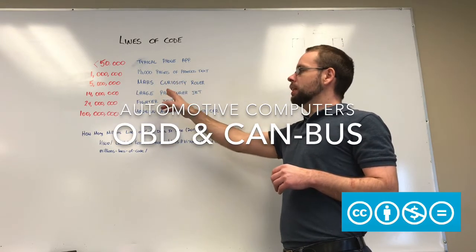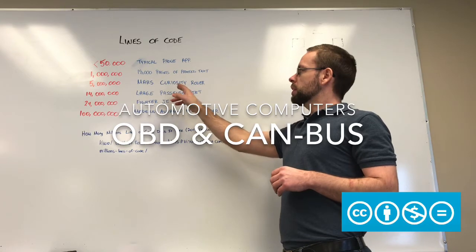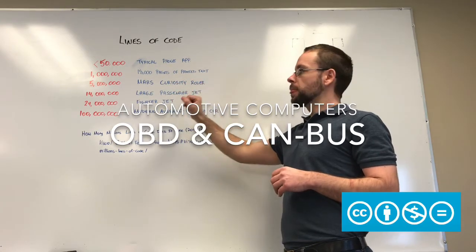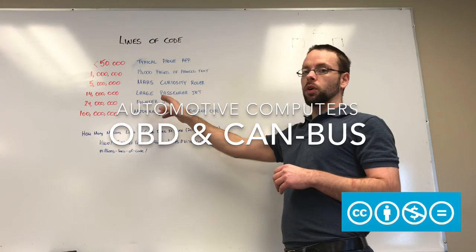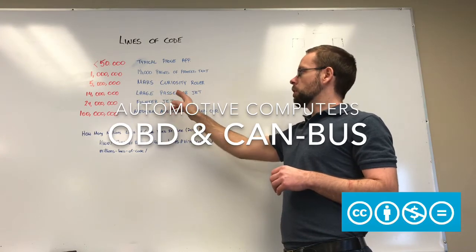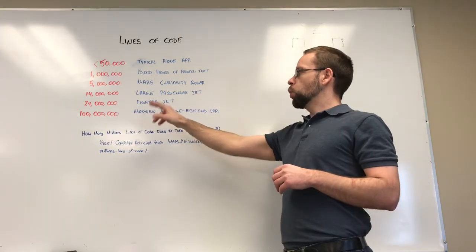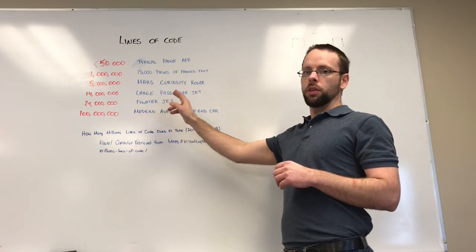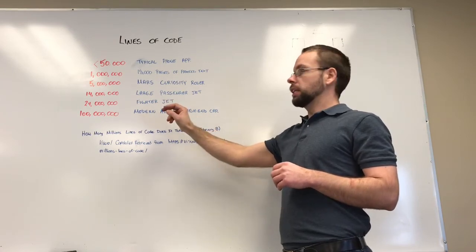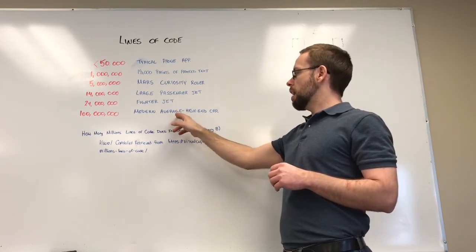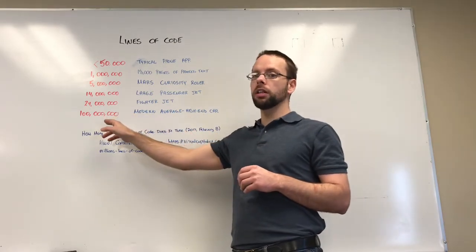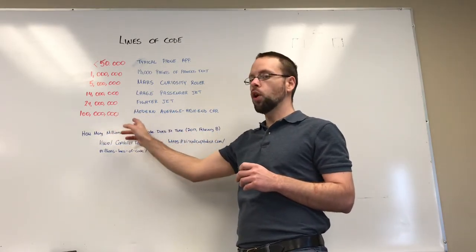5 million lines of code to make the software that runs the Mars Curiosity rover, 14 million lines of code to run the software on a large passenger jet, and 24 million lines of code for the software on a fighter jet. But today's modern average high-end vehicles take approximately a hundred million lines of code.